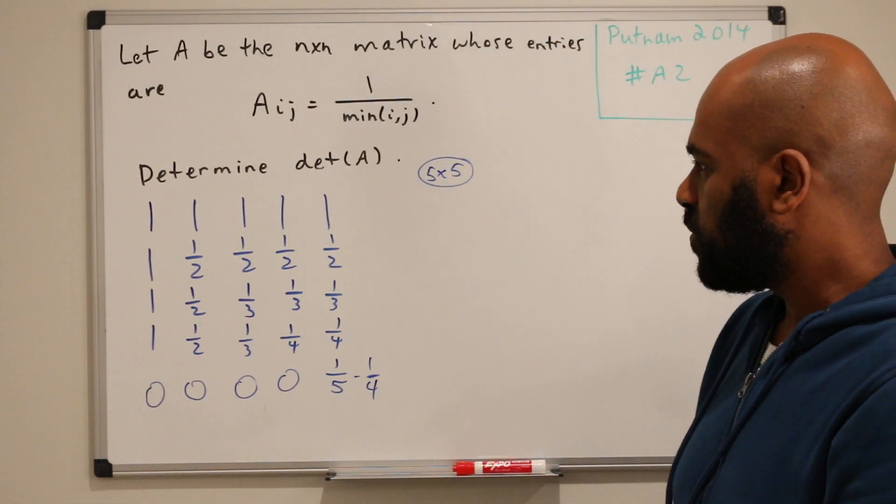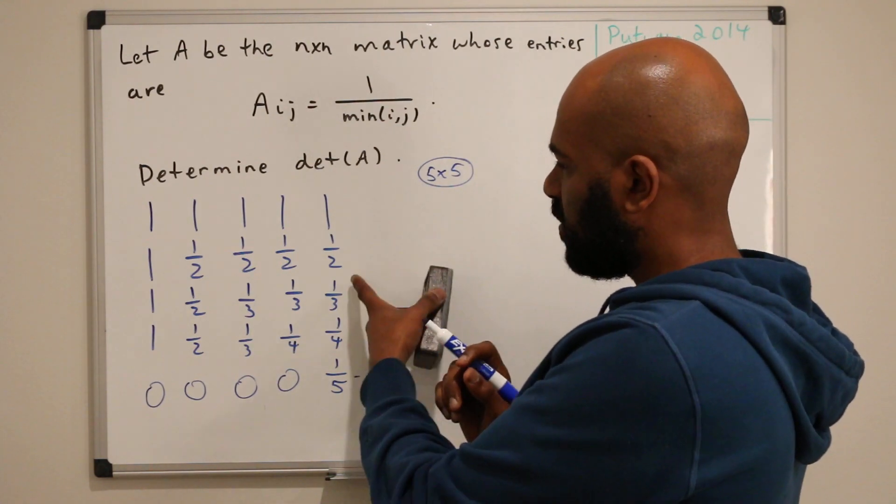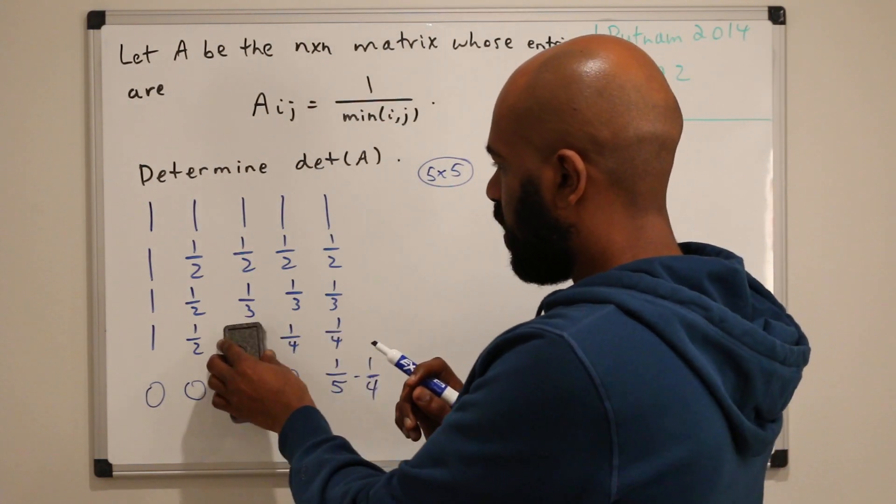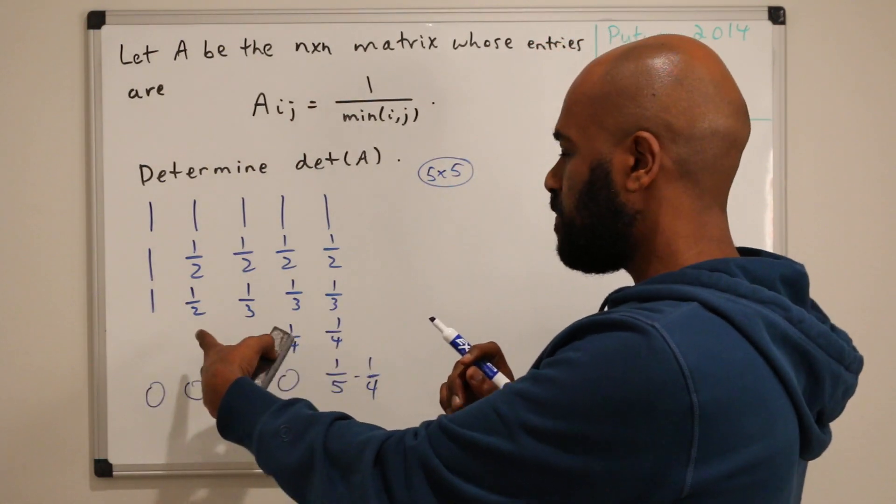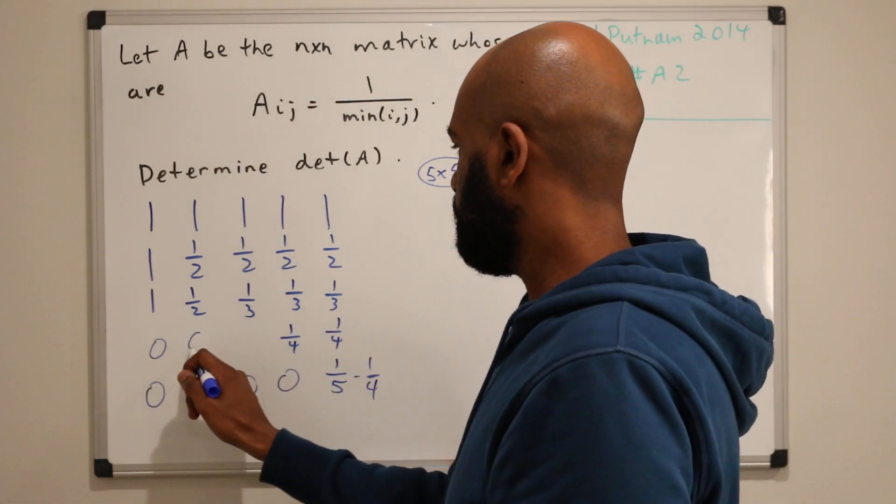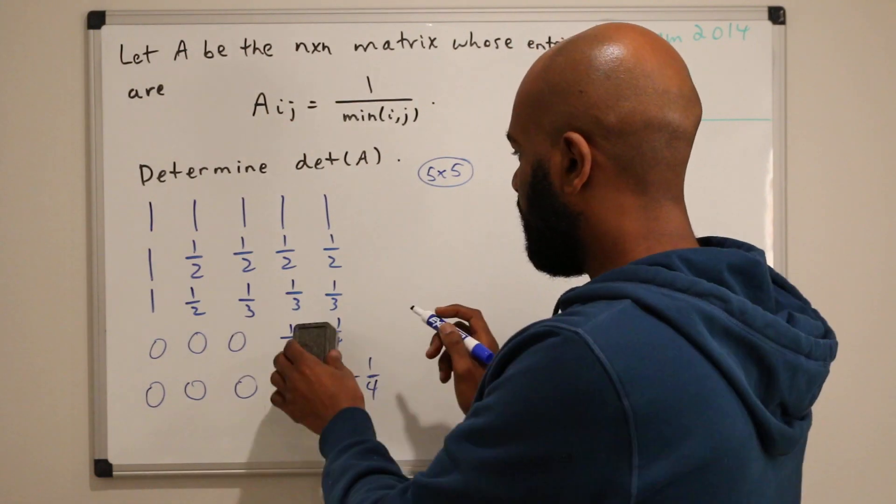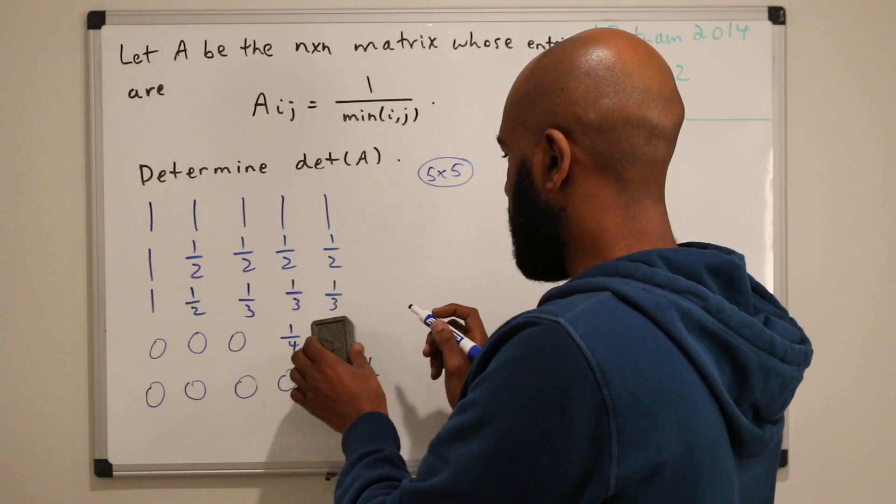We can do this again. If we take this row here and subtract this row, we'll have all of these entries eliminated because the first three entries here are the same. We'll have a fourth minus a third and a fourth minus a third.